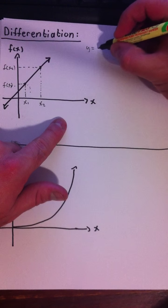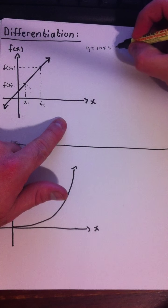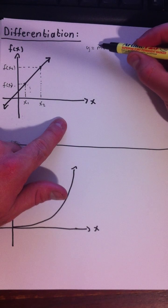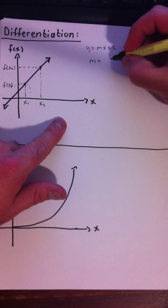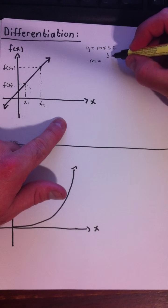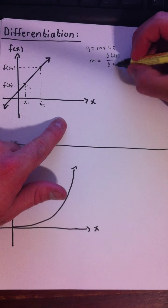We know that a straight line equation y equals mx plus c, we know that this m value here, that's our gradient. The gradient is equal to the change in your f of x divided by the change in your x.